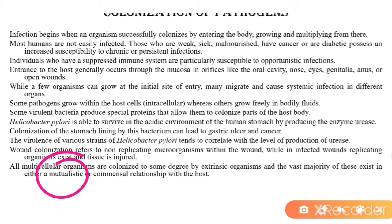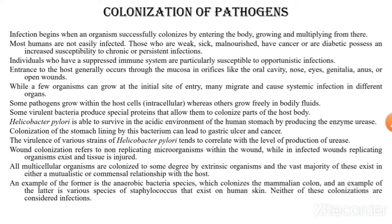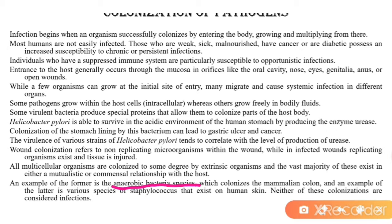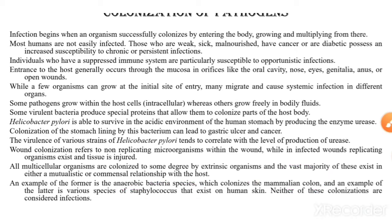Sometimes our body environment — temperature, pH, and other conditions — will change, and due to these changes, opportunistic infections occur. An example of colonization is anaerobic bacteria species that colonize the mammalian colon, and another is various species of Staphylococcus that exist on human skin. Neither of these colonizations are considered infections; these bacteria stay with us in a mutualistic understanding.